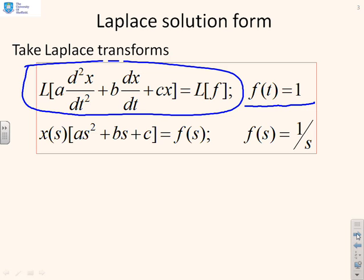The Laplace transform of a derivative means multiply by s when you're ignoring initial conditions. So we get x of s, the Laplace transform of x of t, times as² for the double derivative, plus bs for the single derivative, plus c for the cx, and that equals f of s. And f of s is going to be 1 over s.